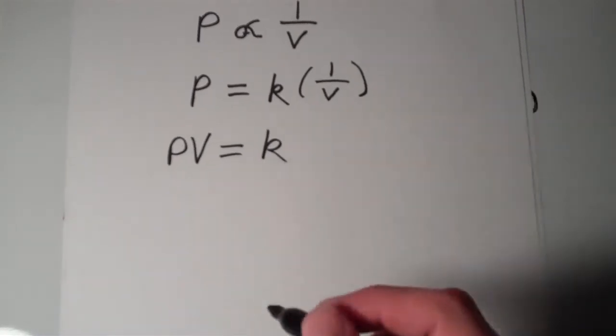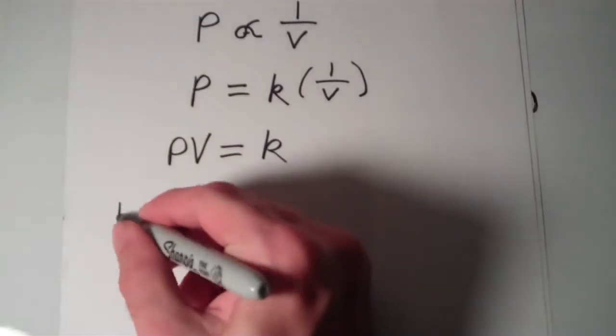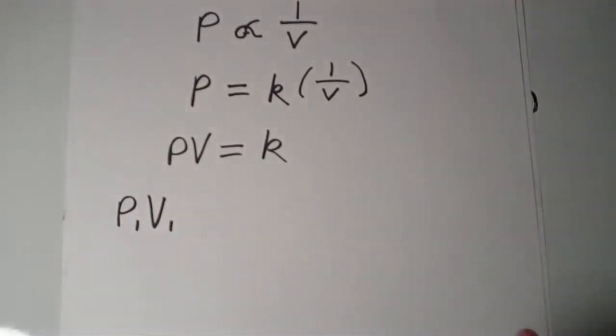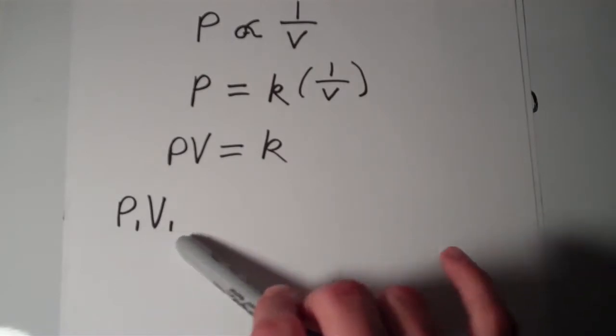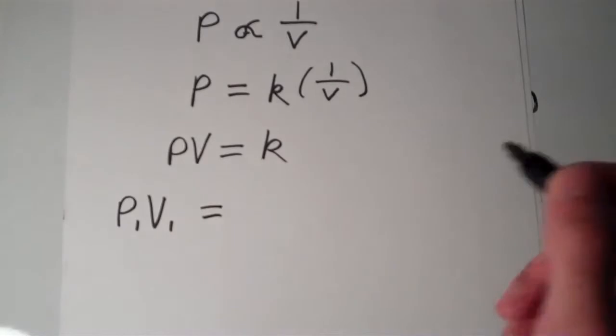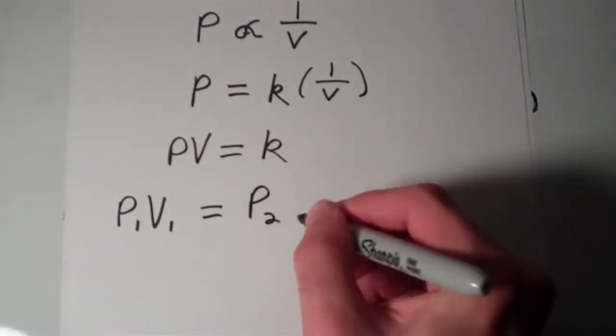So if I have a gas in a state, we'll call that P1 and V1. If I have the state of a gas in which it's at initial pressure and an initial volume, if I multiply those together, then I'll get P2 times V2.